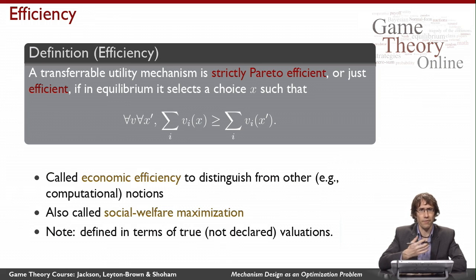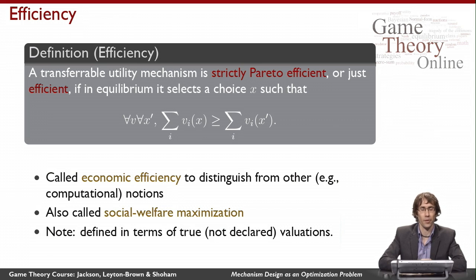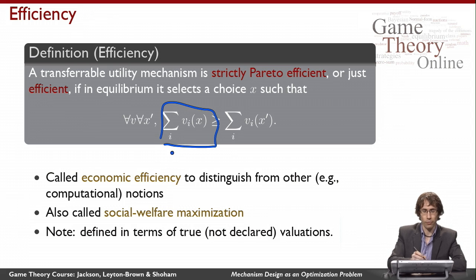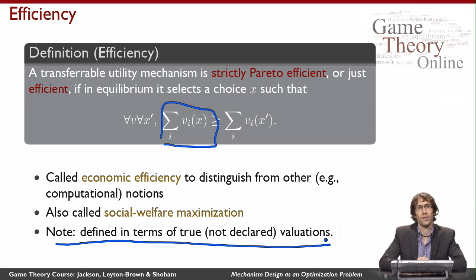We call this efficiency, but there are various other notions of efficiency we might care about, such as computational efficiency — how long a mechanism takes to run. To distinguish them, we call this notion of strict Pareto efficiency 'economic efficiency.' We also call it 'social welfare maximization,' for the obvious reason that we're caring about picking the outcome that maximizes the sum of the agents' utilities. Notice that here I'm talking about the agents' actual valuations.